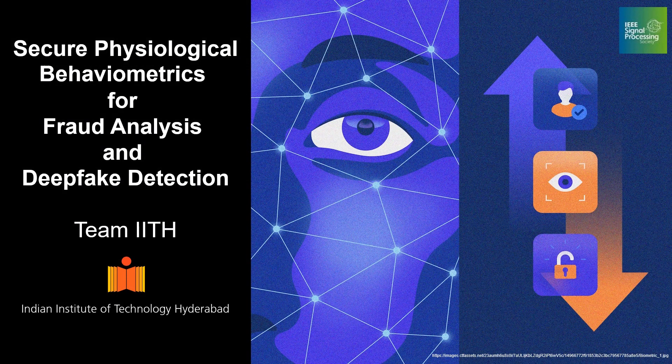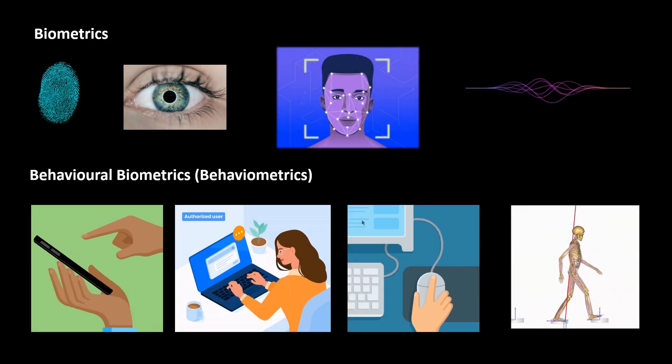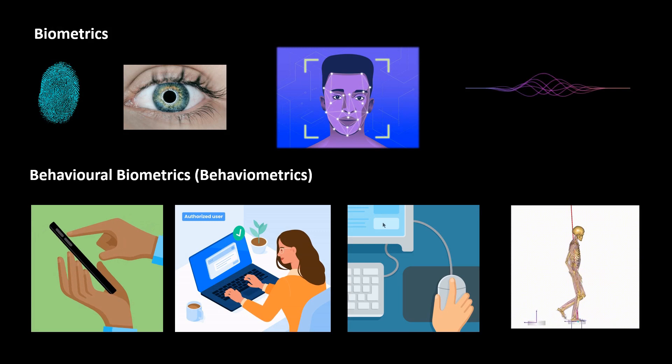Hello, in this video we present our work on Secure Physiological Behavior Metrics. The most common biometrics used in identification or authentication today include fingerprint scans, eye scans, face recognition, and voice recognition.